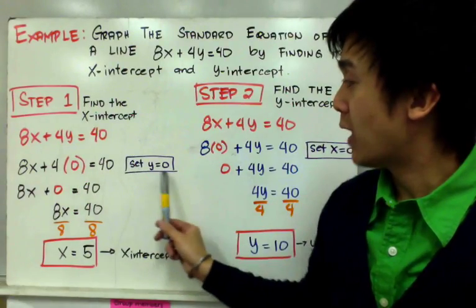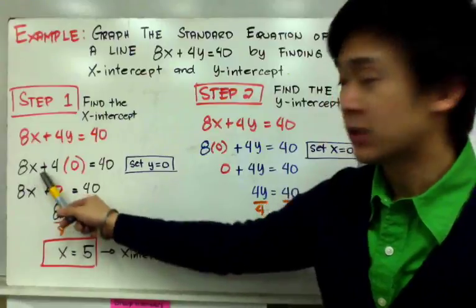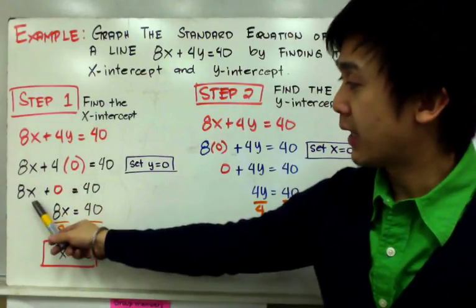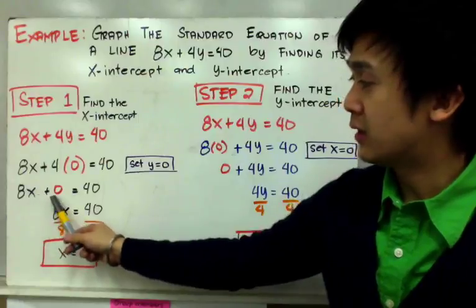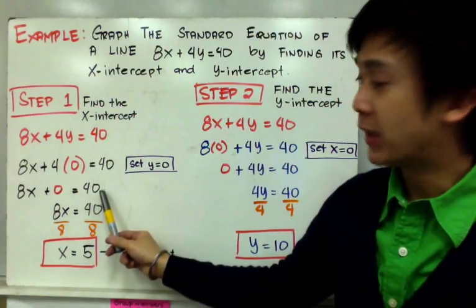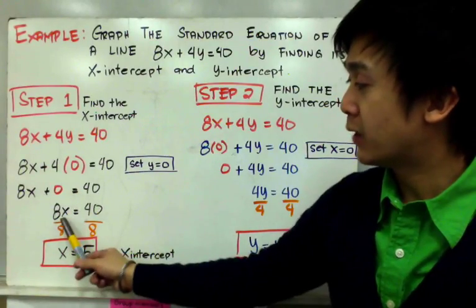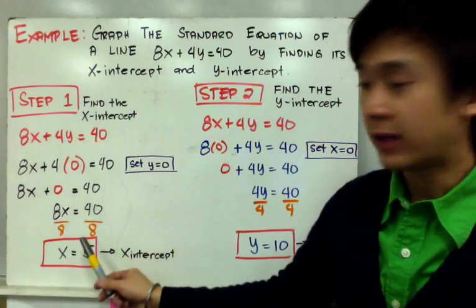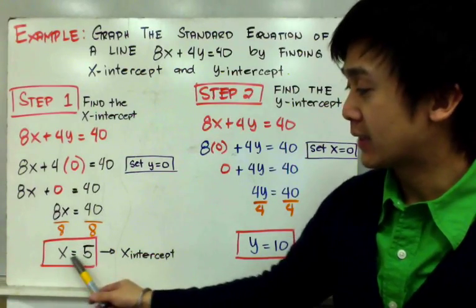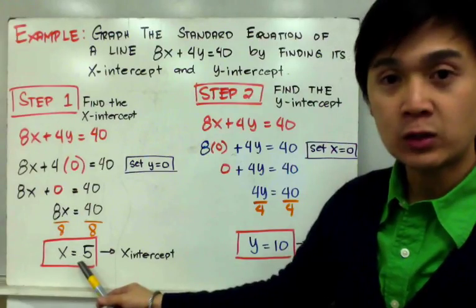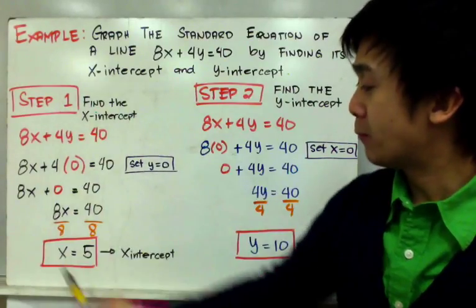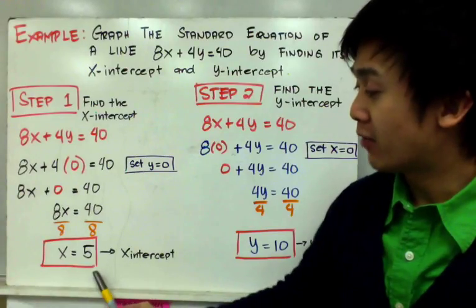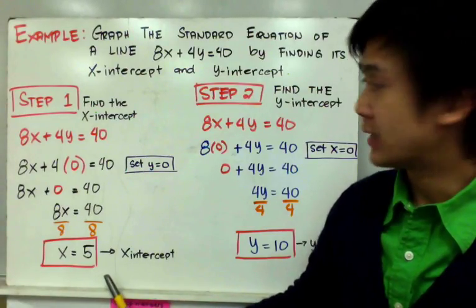Setting y to 0 gives us 8x plus 4 times 0 equal to 40, which simplifies to 8x equal to 40. Dividing both sides by 8 leaves us with x equal to 5. So x equal to 5 is our x-intercept, which we'll graph in step 3.